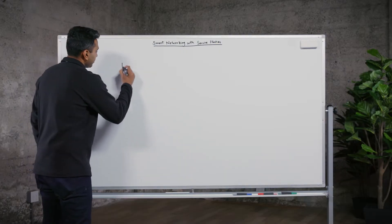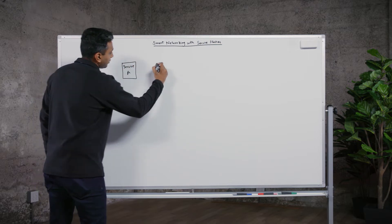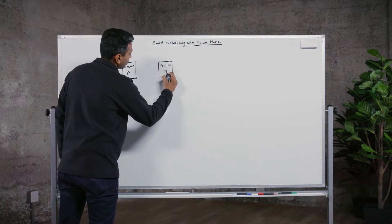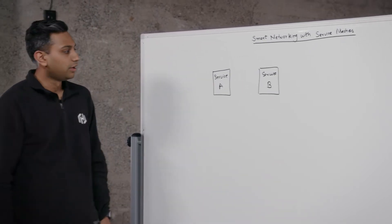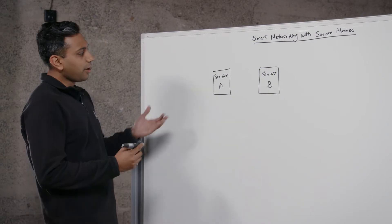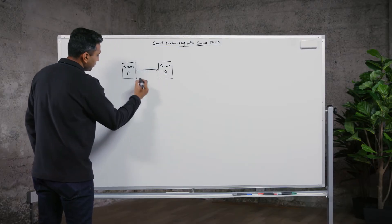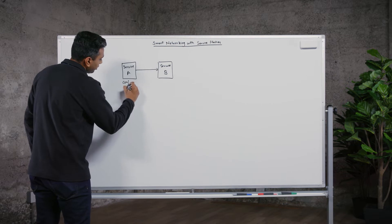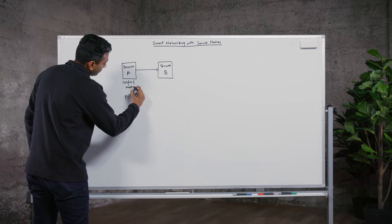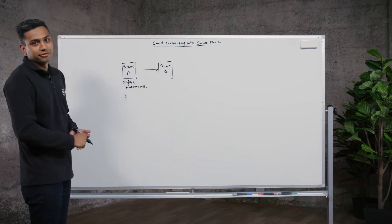So here we have a service called service A and we have another service called service B. These can be a VM or container — they can be running in a bare metal server. How would service A talk to service B? They could just hard code the IP for service B in the config of service A, which is super easy. You can hard code the host name or the IP and just make an HTTP call.